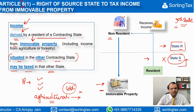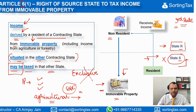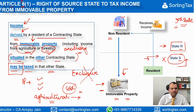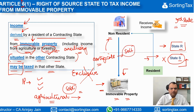The use of the word 'may be taxed' in that other state indicates that the state of source — or the state where the immovable property is situated — does not have an exclusive right to tax the income arising from such immovable property. Another thing to mention is that it is not only income from agriculture or forestry, but certain ancillary income integrally related to agriculture and forestry will also be taxed under Article 6. For example, if carrying out a forestry activity requires a certificate from the government in the source state, and this is obtained by the non-resident but later sold, even the income from selling that certificate will be considered as income from forestry and covered within Article 6, Paragraph 1.